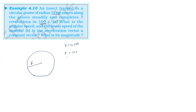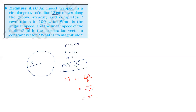The time period is the time taken to complete one rotation: 100 seconds divided by 7. The angular speed omega is 2π divided by T, which gives 44 divided by 100, equal to 0.44 radians per second.